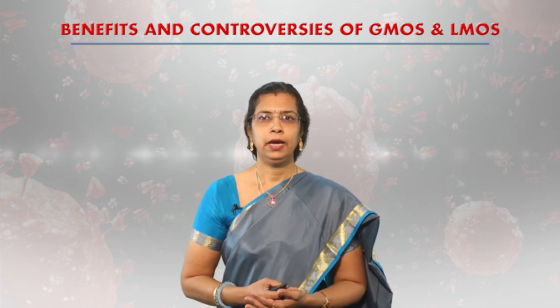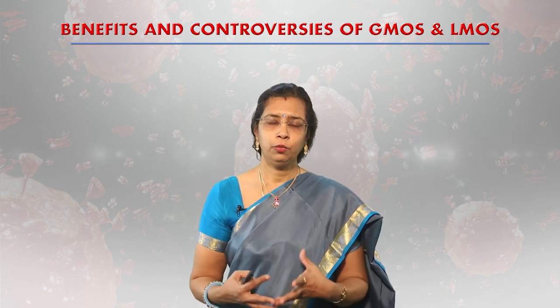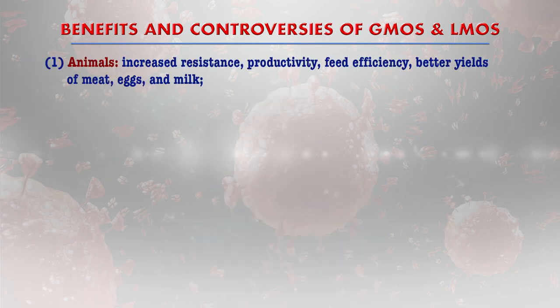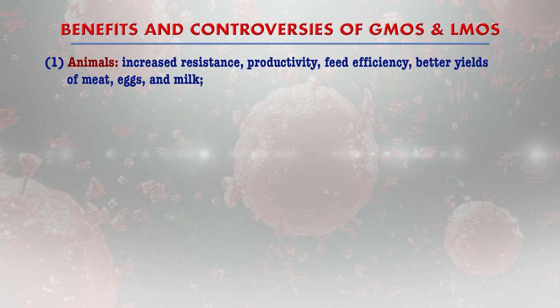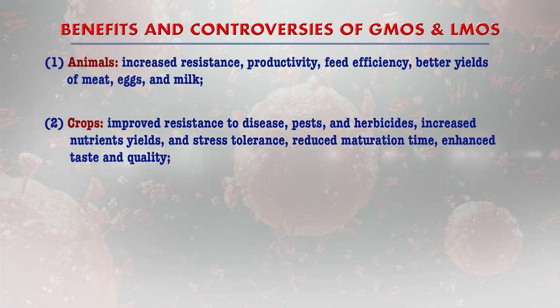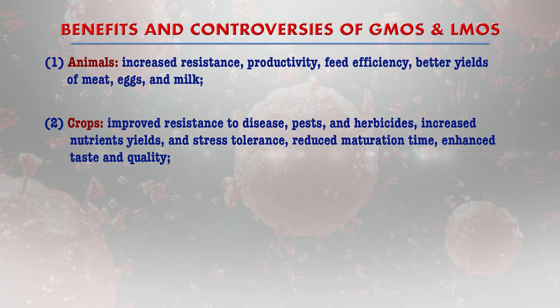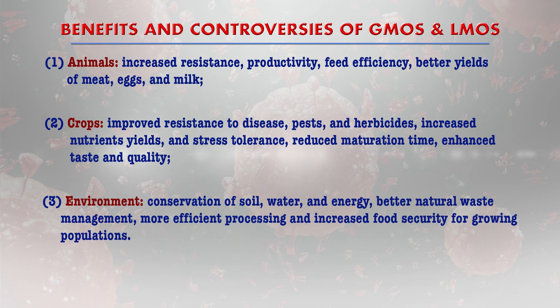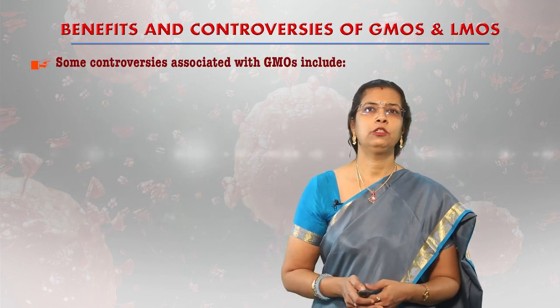The benefits and controversies of GMOs and LMOs are widely discussed in media, particularly regarding safety for consumption and allergenicity. For animals, GMOs provide increased resistance, increased productivity, better feed efficiency, and better yield of meat, eggs, and milk. For crops, there is improved resistance to disease, pests, and herbicides; increased nutrient yield; increased stress tolerance; reduced maturation time; and enhanced taste and quality. For the environment, GMOs help in conservation of soil, water, and energy, better natural waste management, more efficient processing, and increased food security for growing populations.